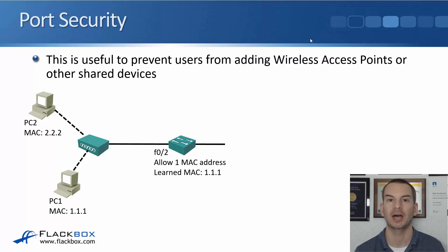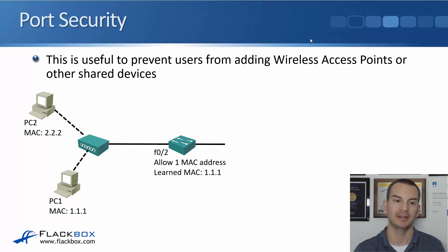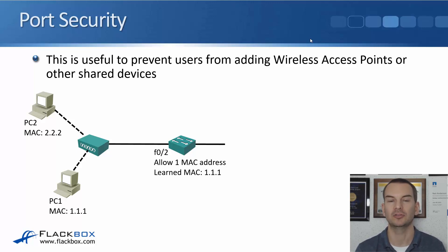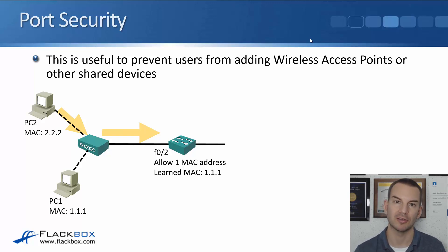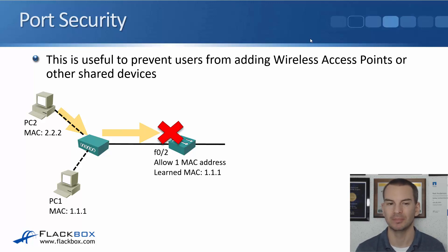Port security can stop that from happening. If the user connects a wireless access point or another switch into that port, now PC1 with MAC 1.1.1 and PC2 with MAC 2.2.2 are both trying to use physical port FastEthernet 0/2 on the switch. But it's only allowed one MAC address, which is 1.1.1. So when the additional PC with MAC 2.2.2 tries to send traffic into the network, the switch is going to drop it. That's what port security is most commonly used for in production networks.